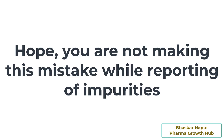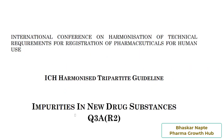Good morning everyone, Bhaskar here. Today's topic of discussion is how one can report impurities — specifically, how many digits after a decimal point need to be considered while reporting an impurity. You must be aware of the two important ICH guidelines when it comes to impurities. The first one is ICH guideline Q3AR2, which talks about impurities in new drug substances.